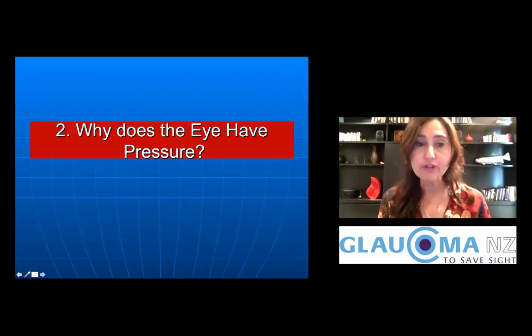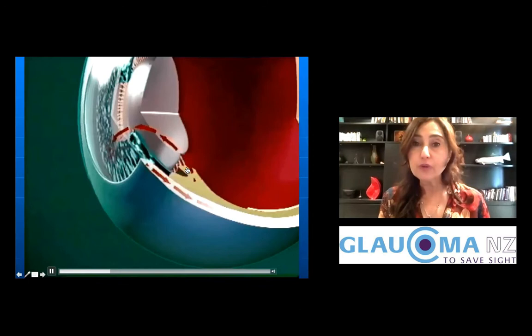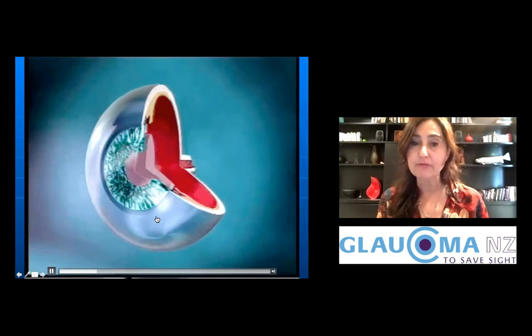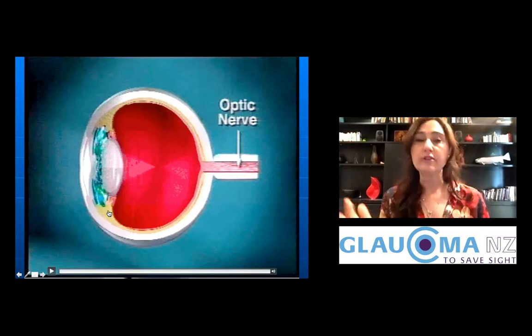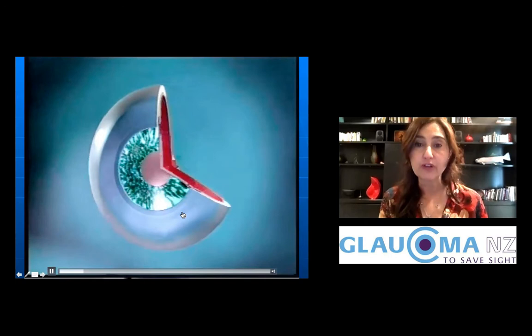Why does the eye need to have pressure? If it didn't, it would shrivel up like a raisin. The fluid inside the eye gives it its shape so it can function and see. This fluid is produced in the front of the eye by a gland called the ciliary body, passes through the pupil, and drains through the drainage system — like a sponge in the corner of the eye. The pressure is determined by the balance between fluid production and drainage.